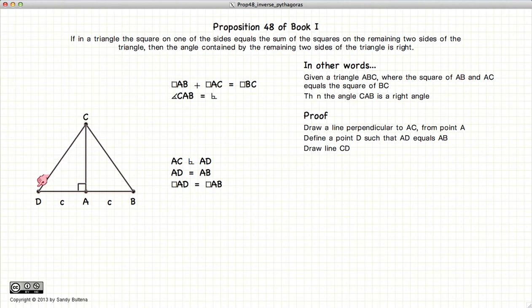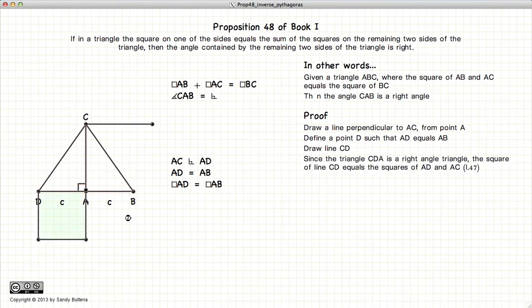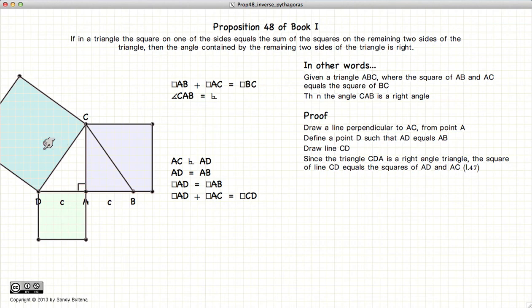Now, if we look at this triangle, this is a right angle triangle, and according to Proposition 47, the sum of the squares is equal to the square of the hypotenuse.